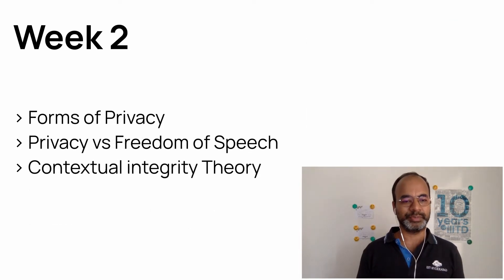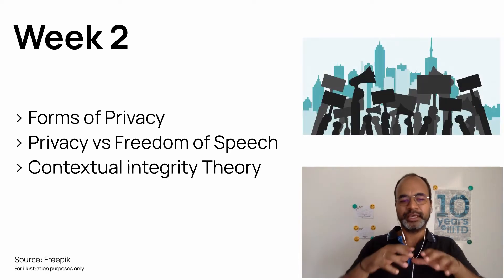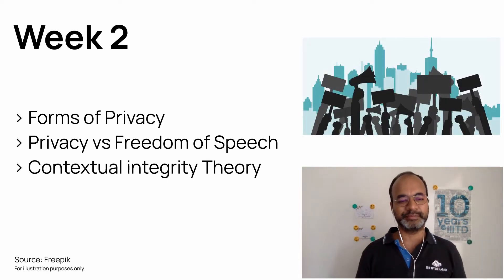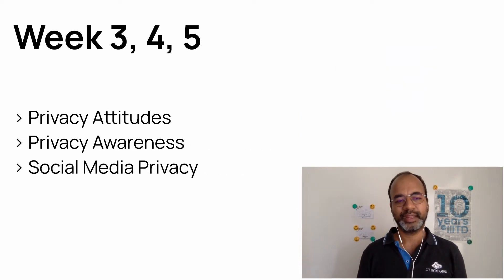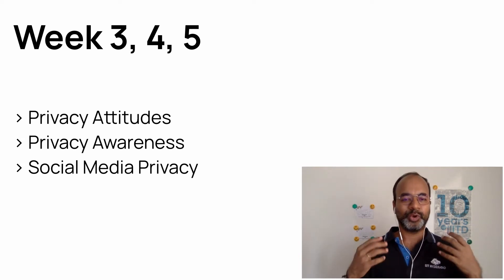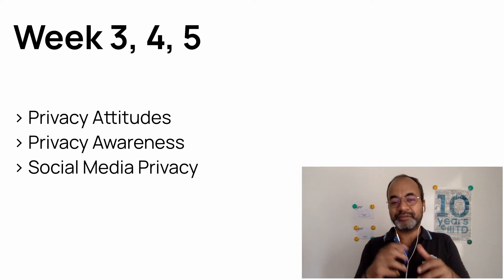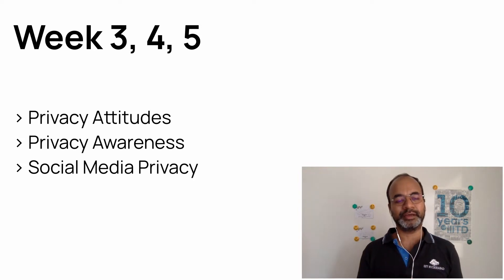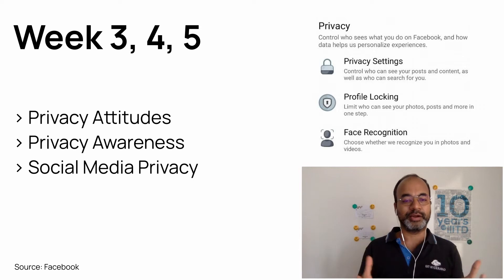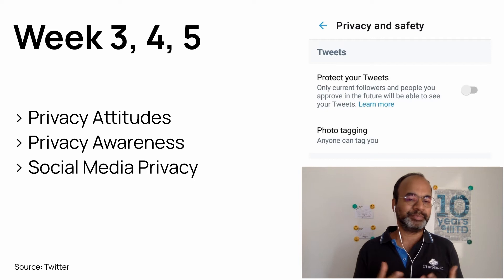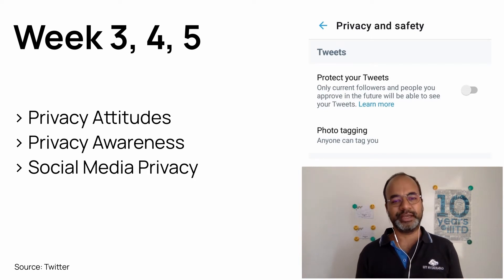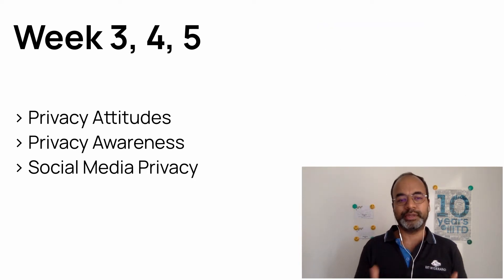Week two, the topics will be around definitions of privacy, different forms of privacy, trade-off between privacy and freedom of speech, contextual integrity, and theory and applications. The next couple of weeks will look at privacy attitudes and awareness — what people think of privacy, how they make decisions, what are the different classifications of citizens within the context of privacy and social media privacy. How privacy has evolved in social media is a topic we'll also cover in this set of weeks.